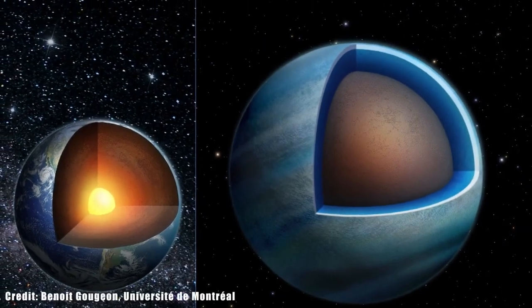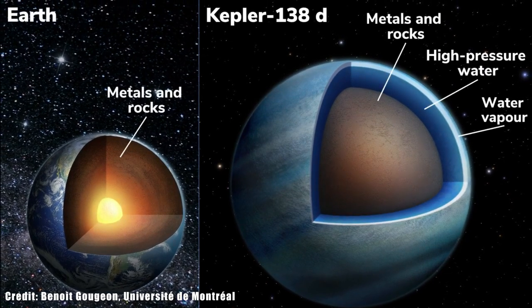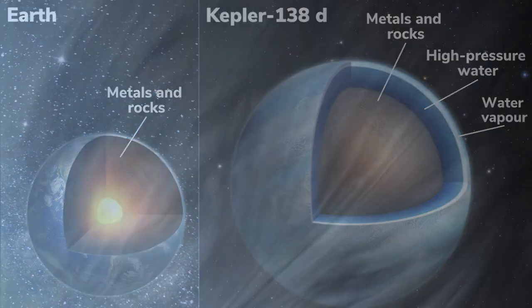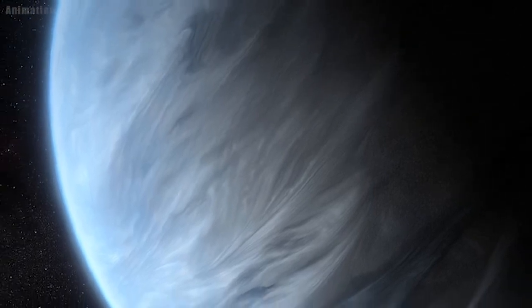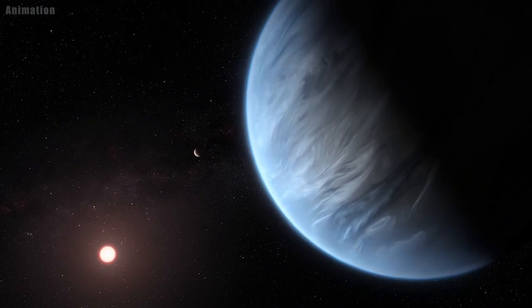Researchers caution that the planets may not have surface oceans like on Earth. The temperature of one planet's atmosphere is likely above the boiling point of water. They expect a thick, dense atmosphere made of steam on this planet, but there could potentially be liquid water at high pressures below it.